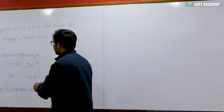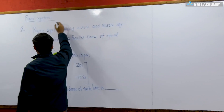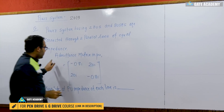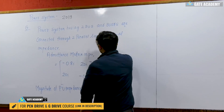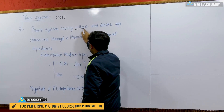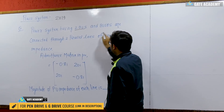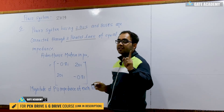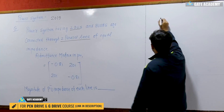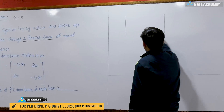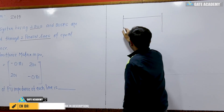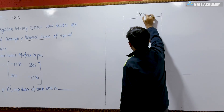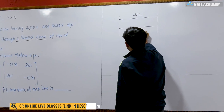The next question is based on the power system, from GATE 2019, on the topic of the Y-bus. You can see the Y-bus of a two-bus system is given. The important point is that these two buses are connected by two parallel lines — suppose I have two buses, with line one and line two, and these are identical lines.